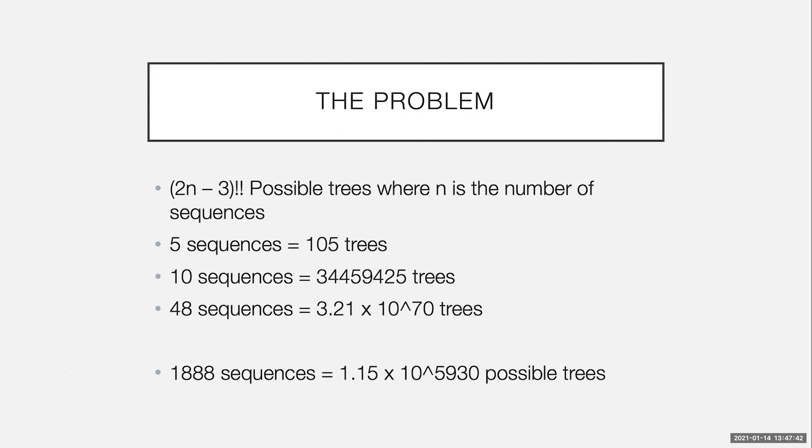The current SARS-CoV-2 data set is over 350,000 sequences. So it's orders of magnitude larger. So it's a completely astronomical, unimaginable number. There is no way to check all of those trees and find out which one is the best one.